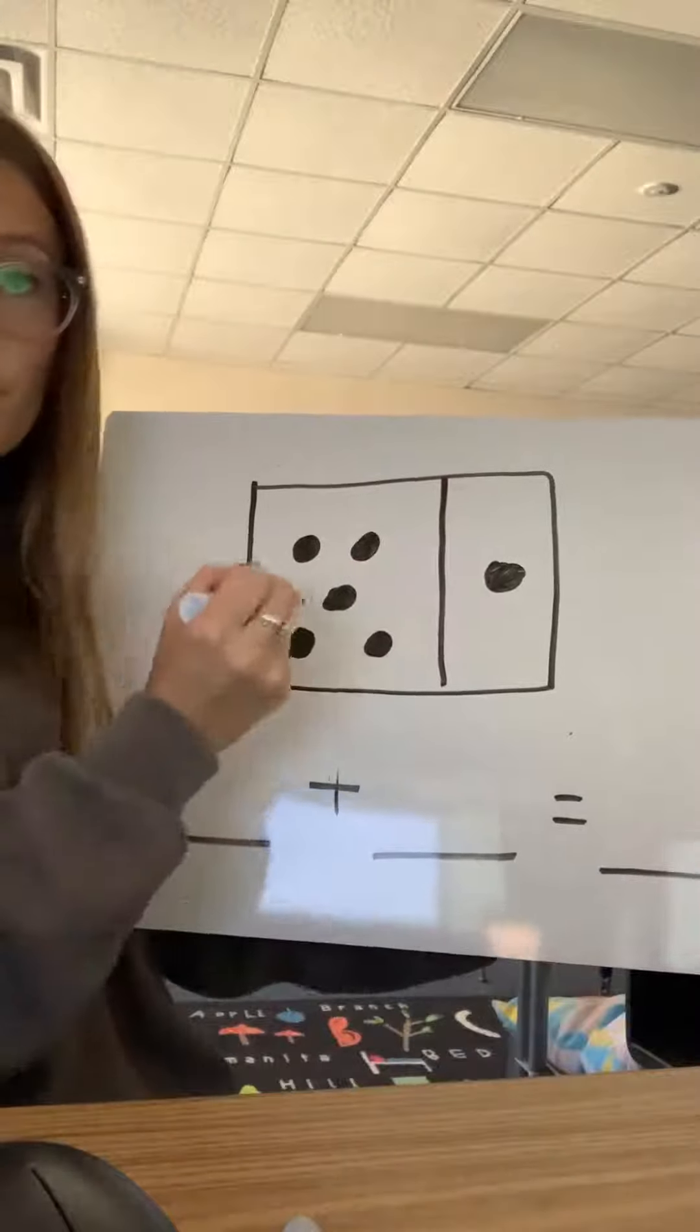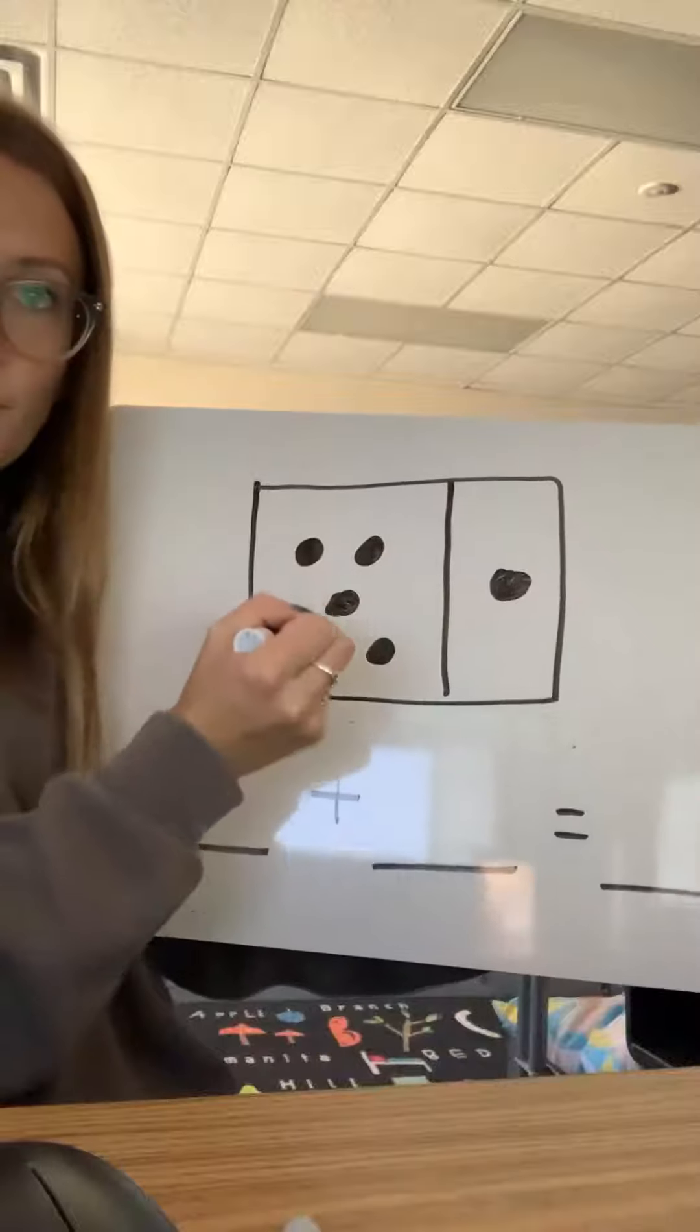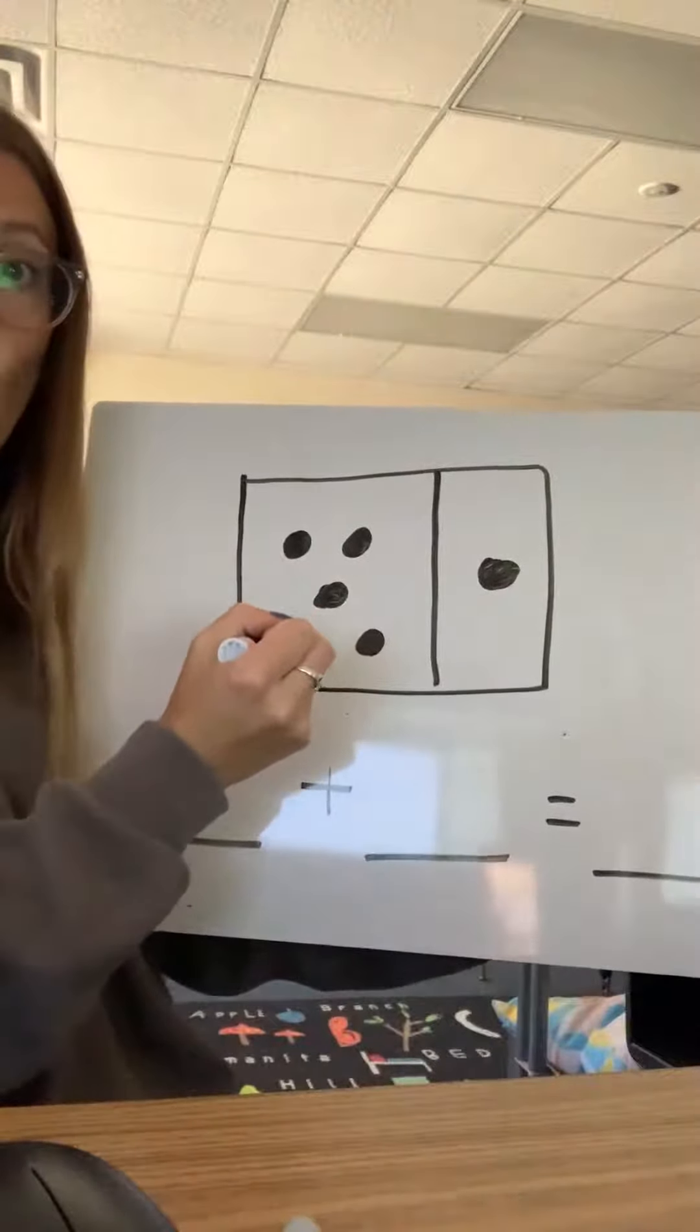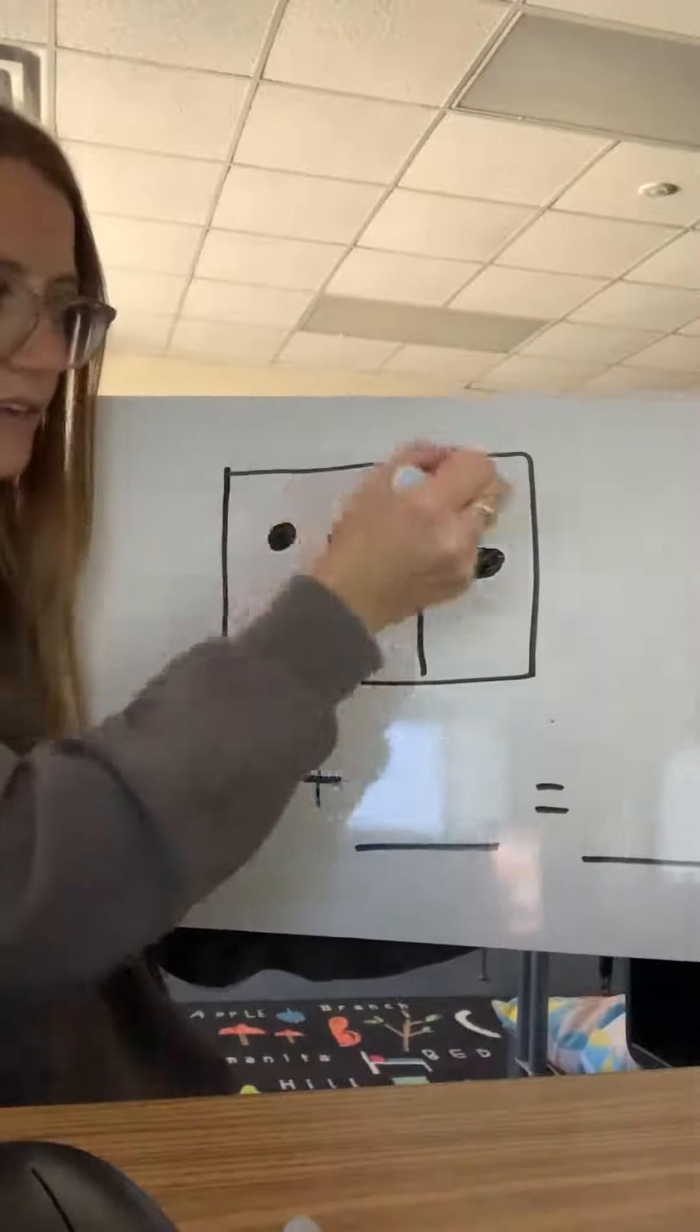I can see right away that there are five here because I see one, two, three, four, five. I know there are five here. So I'm going to count on one more to get my total. We start at five, six.